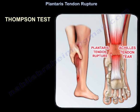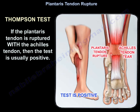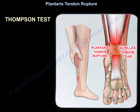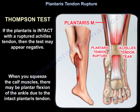Thompson test. If the plantaris tendon is ruptured with the Achilles tendon, then the test is usually positive. When you squeeze the calf muscle, there might be plantar flexion of the ankle due to an intact plantaris tendon.